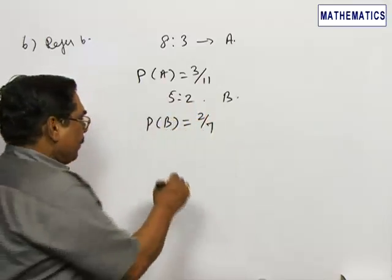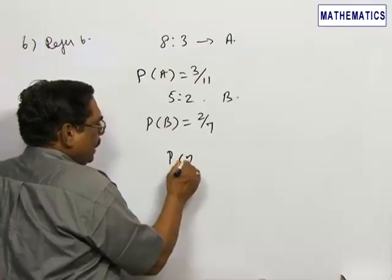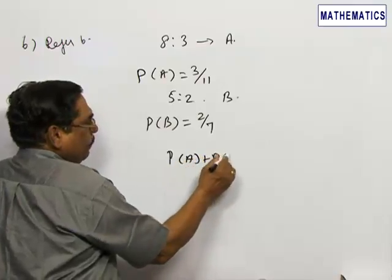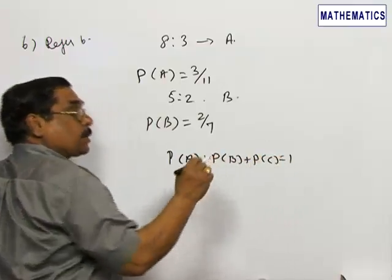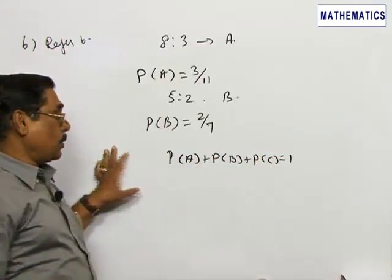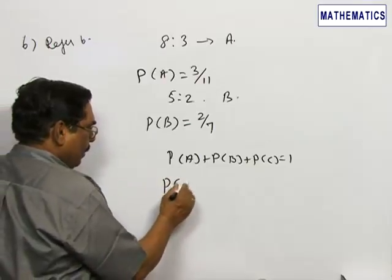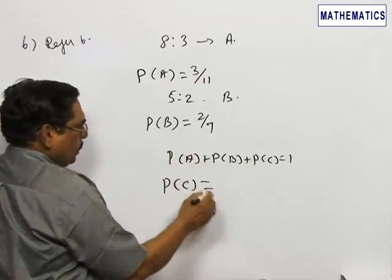Now it is given P of A plus P of B plus P of C is equal to 1, because they are mutually exclusive as well as exhaustive. Therefore P of C will be equal to 1 minus P of A plus P of B.